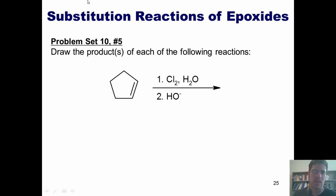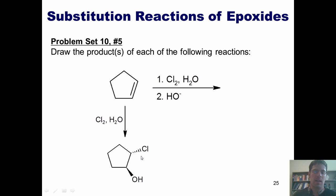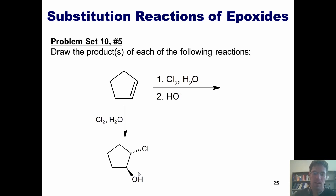Here's the answer. If I take this alkene and treat it with chlorine and H₂O, it gives me a product in which the chlorine and the OH are trans to each other. I will also form the enantiomer of this product. If I treat this with base, the base will strip the proton off of the OH, giving me an O-.